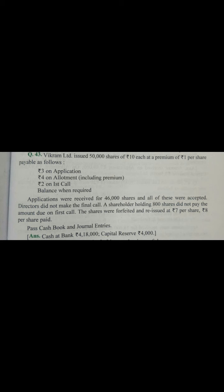The shares were forfeited and reissued at 7 rupees per share, with 8 rupees per share paid. As the shareholder was unable to pay the first call money, his shares were forfeited and reissued. All 800 shares were forfeited and reissued at rupees 7. So let us see how to make the journal entries and prepare the cash book.